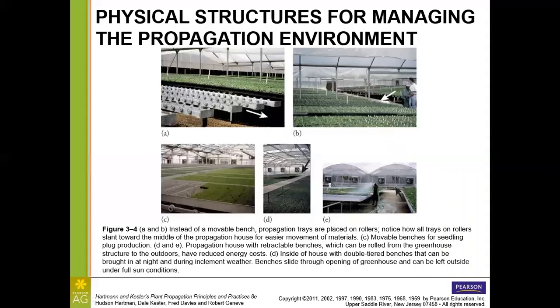There are a couple of different types of benching. Here we have some movable benches under C, where these large benches inside the greenhouse can move from one side to the other. This can help to maximize the space, because instead of leaving a large aisle open in just one place, you can roll everything over to one side, change the position of the aisle, and get into where you need to work.